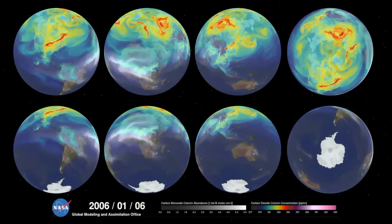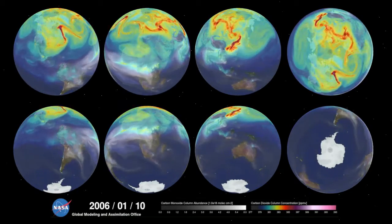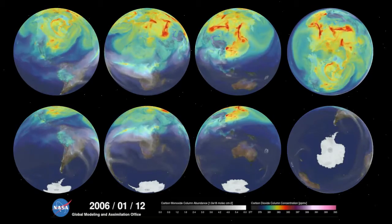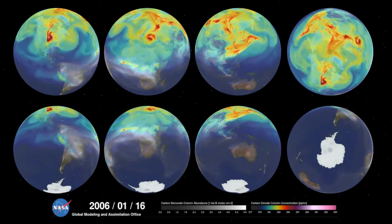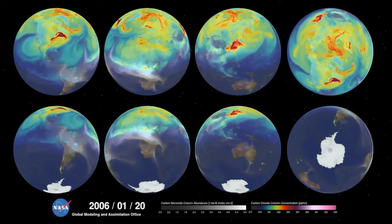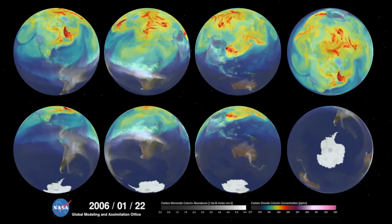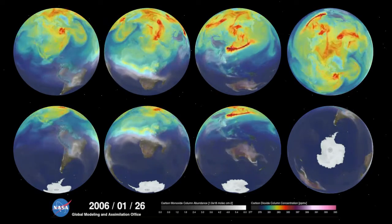Hi, this is Bill Putman. I'm a climate scientist at NASA's Goddard Space Flight Center. What you're looking at is a supercomputer model of carbon dioxide levels in the Earth's atmosphere.